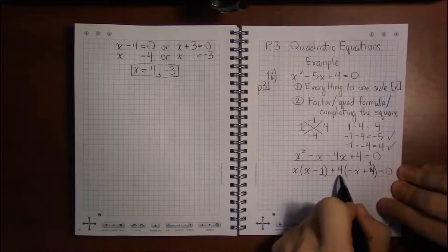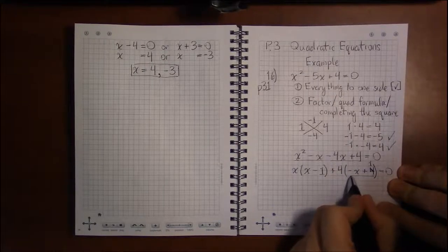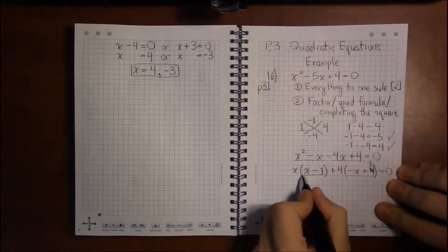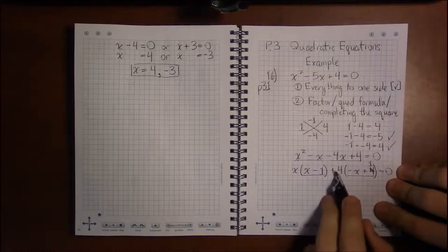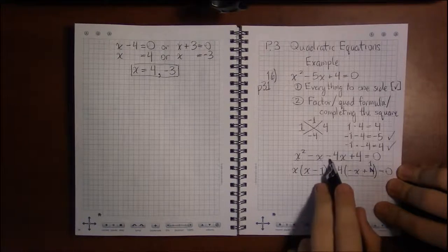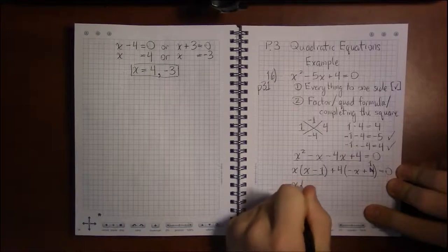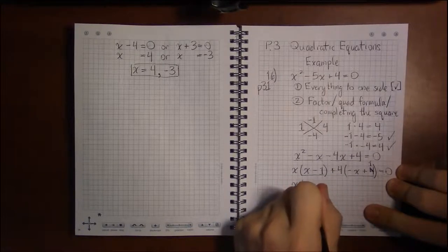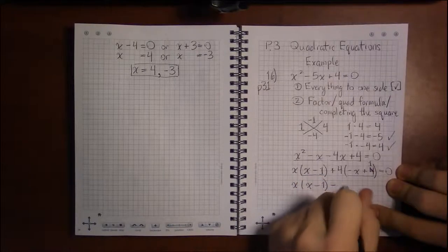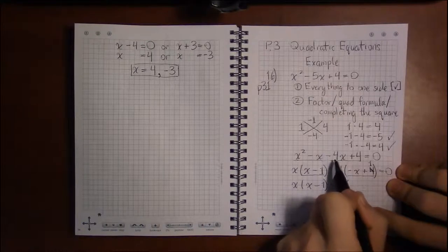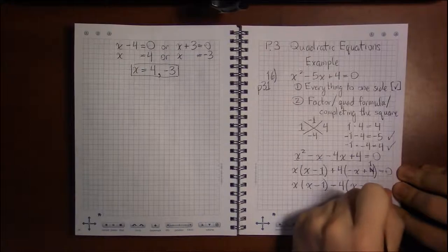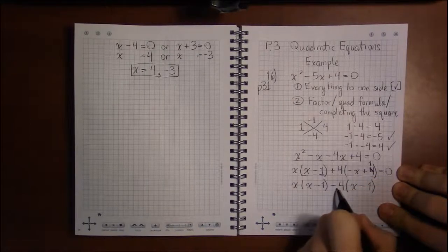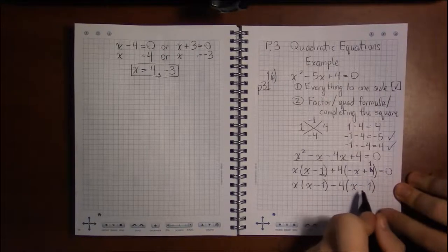The problem is that what's in parentheses in the first group is not the same as in the second group, so we don't have a common factor. Instead of pulling out a plus 4, if the terms in parentheses aren't equal, pull out a negative 4 instead. Pulling minus 4 out of minus 4x leaves x, and pulling minus 4 out of positive 4 leaves minus 1, because minus 4 times minus 1 equals plus 4.